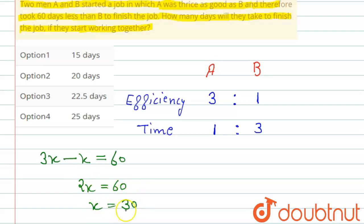Now we found the x value. So our total work is: x value is 30, and A's efficiency is 3. So 3 into 3, that is equal to 90. So 90 units is the total work.